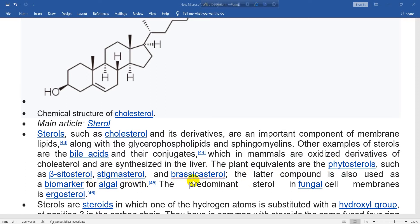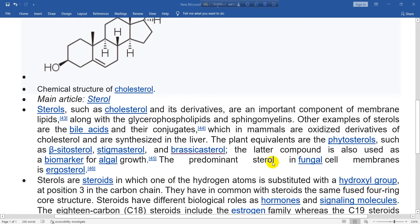stigmasterol, and brassicasterol. The latter compound is also used as a biomarker for algal growth. The predominant sterol in fungal cell membranes is ergosterol.